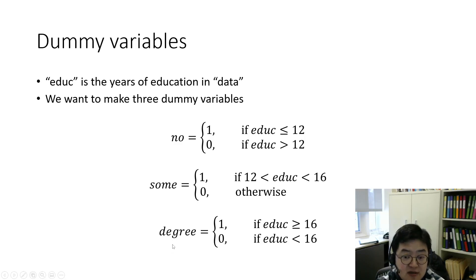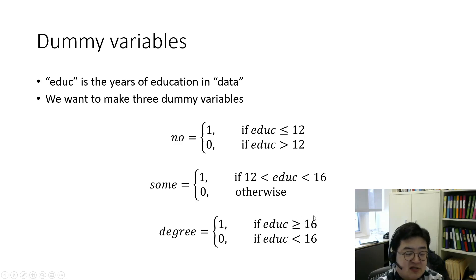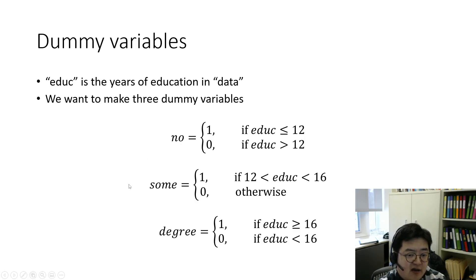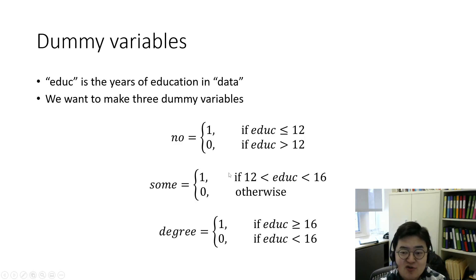The last group is 'degree' — the college degree group. Those who have a college degree have education of 16 or greater. 16 years is a four-year college degree. So I will classify observations into these three groups and make a dummy variable for each group. Mathematically it is pretty easy to understand, but how do we implement that in R?